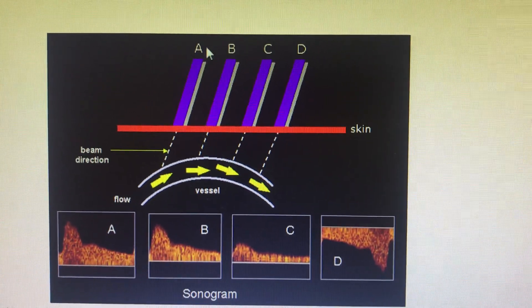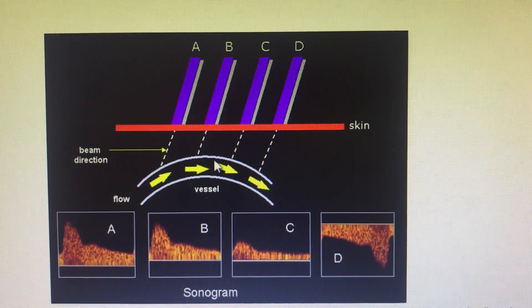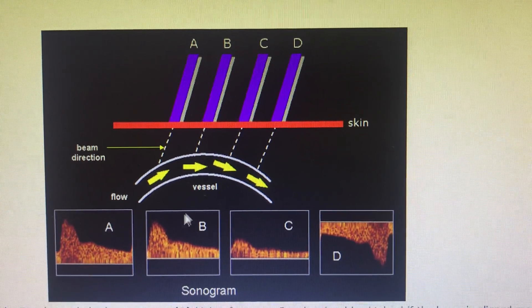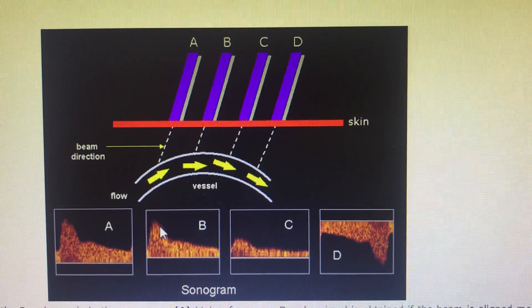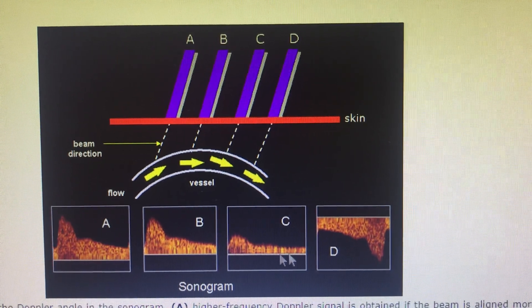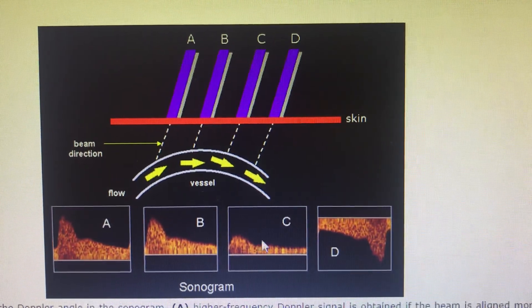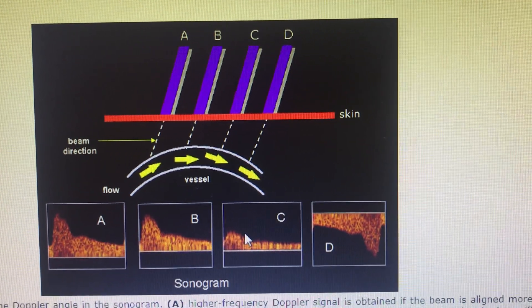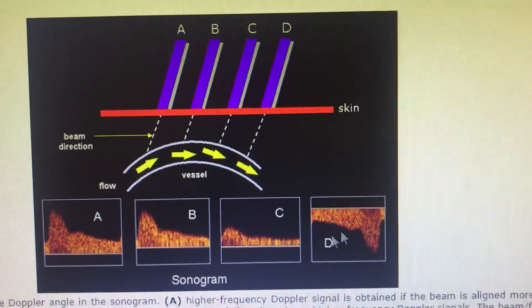At probe position B, the angle is almost 75 to 80 degrees, and usually that amplitude will be nullified and decreasing. If you see position C, it's almost neutral - absolutely 90 degrees - so the amplitude or velocity is almost negligible.